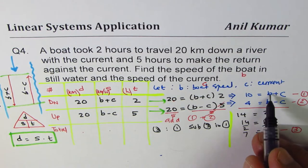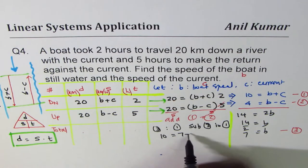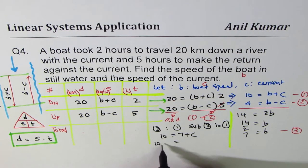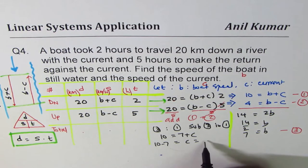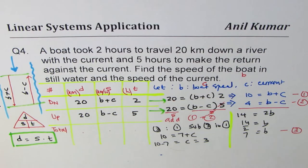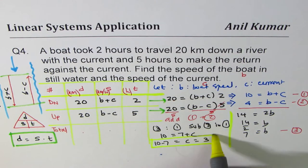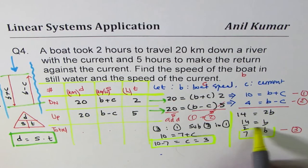B is 7. We'll substitute 7 here. So we get 10 equals to 7 plus C. So 10 minus 7 is C which is 3. So we get both the answers. So the current is 3. Boat speed is 7.